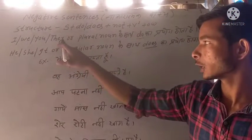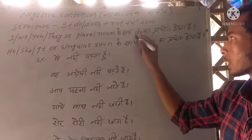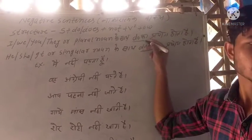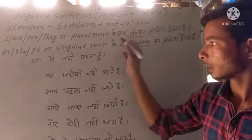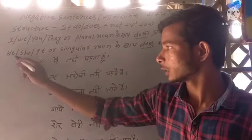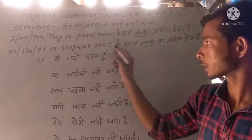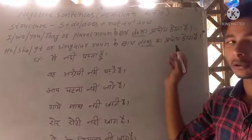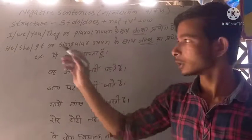I, we, you, they, and plural nouns take 'do'. He, she, it, and singular nouns also take 'does'. Do you understand? Yes sir.